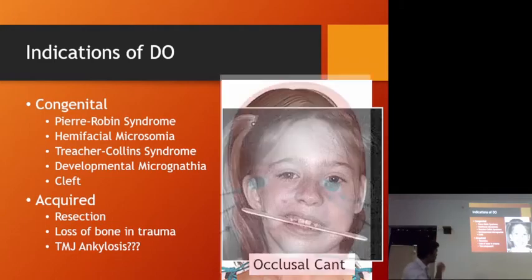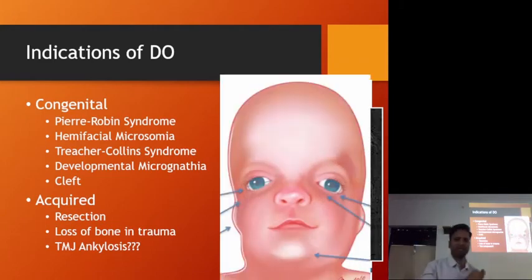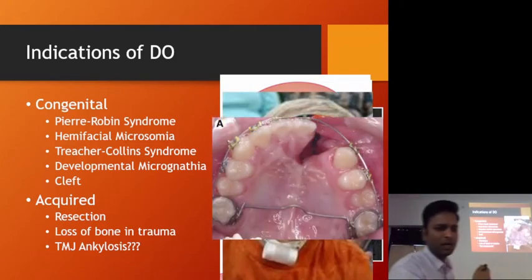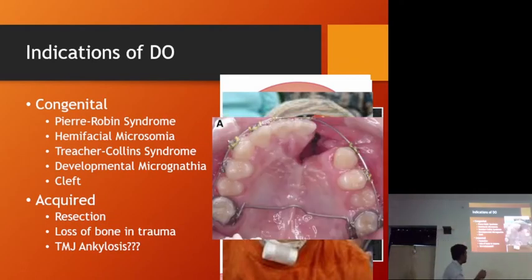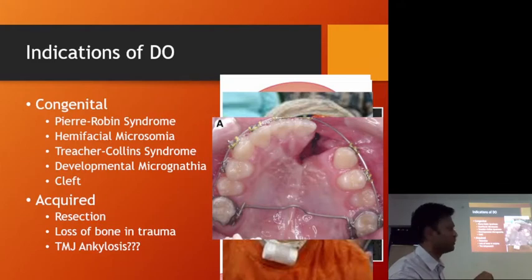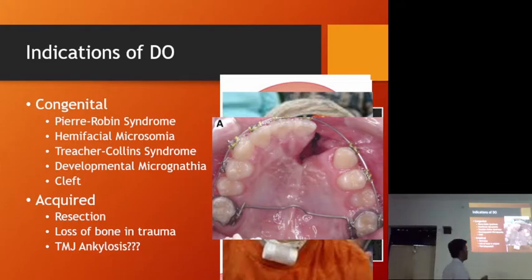We also have Treacher Collins syndrome, micrognathia, and cleft alveolus. For cleft alveolus, we can create an osteotomy in this region between the two teeth, move the tooth segment into this region, and then graft that side so the defect is smaller.